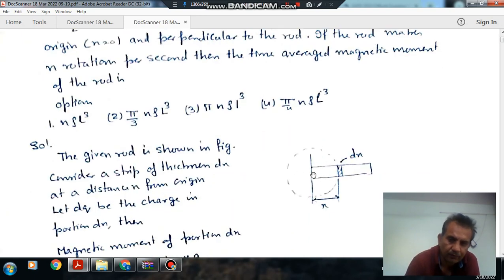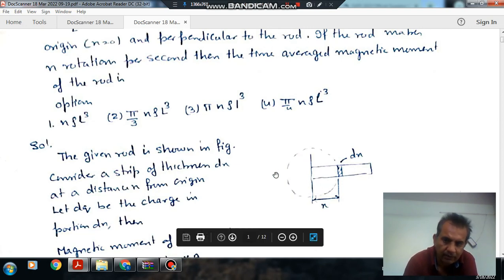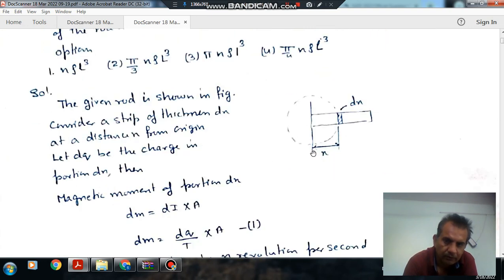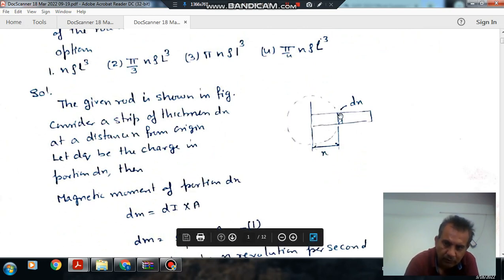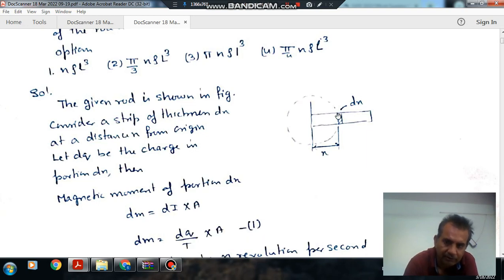So this is the rod. Now consider a small strip of thickness dx on the rod at a distance x. Let this rod be rotated, so this strip will also be rotated. This x element will trace a circle with radius x.